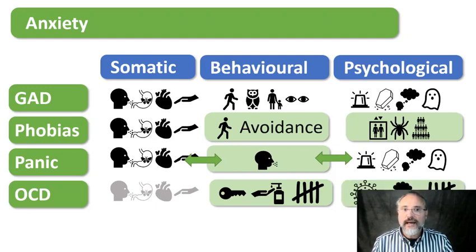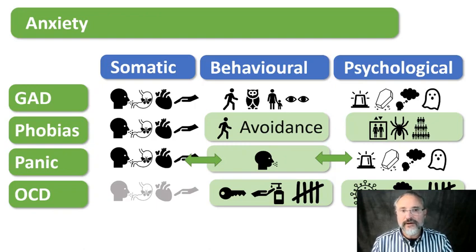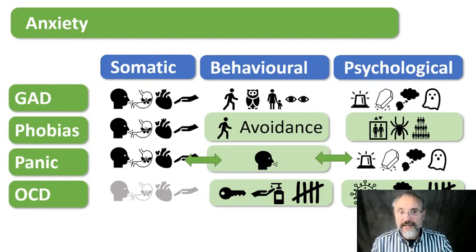Compulsions are accompanied by obsessions — thoughts about one particular subject that the person cannot get out of their head even though they don't want to think about it. These are often preoccupations about things going wrong, sometimes about contamination, safety, sex, or religion, and they take hold of the minds of people with OCD. So OCD involves obsessions and compulsions, but it is an anxiety disorder.